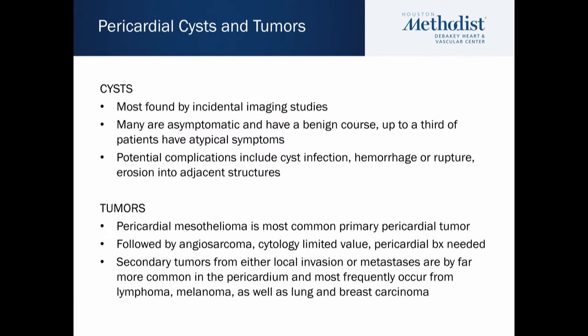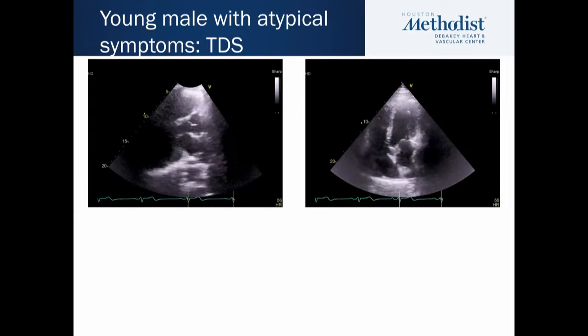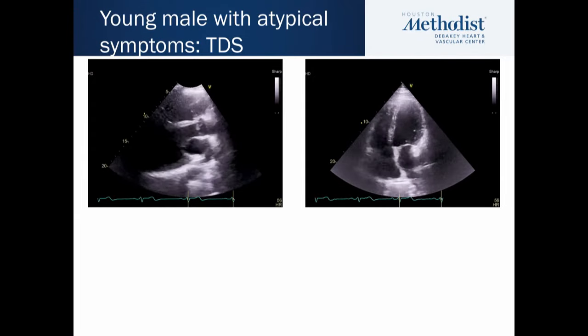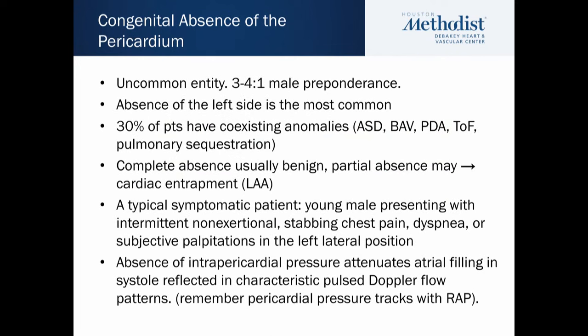Pericardial cysts — you can see them on echo and infer a lot, and usually these are benign findings. The last case: a patient with a technically difficult exam showing an appearance of an enlarged RV and RA — the 'teardrop shape' of the heart is the term generally used — and this is congenital absence of the pericardium, which is uncommon and usually found in young men. Theoretically and reportedly you can have entrapment of some cardiac structures. These cases really deserve CT and MRI.